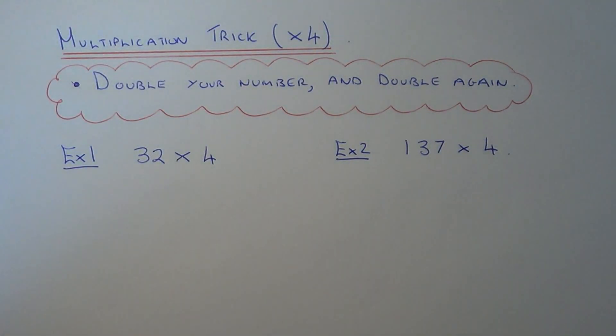Today I'm going to show you a quick way of multiplying by 4 without having to know your 4 times tables. The little trick here is to double the number that you're starting with and then you double the answer again.